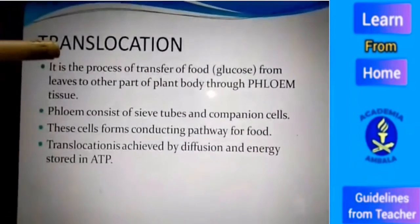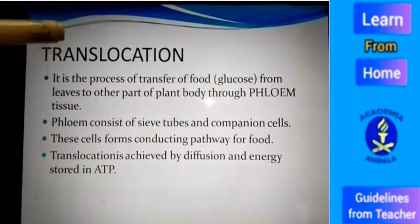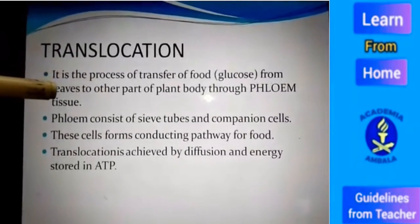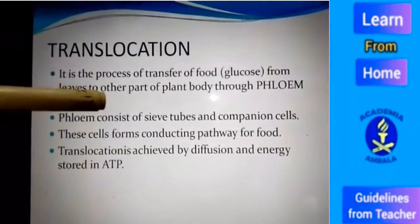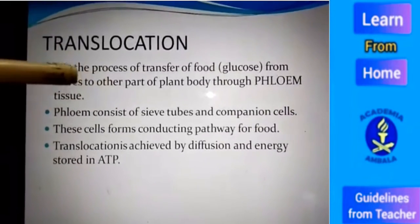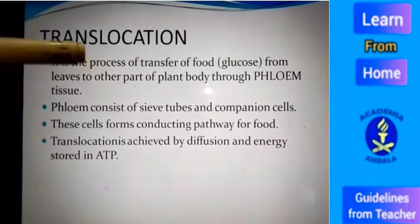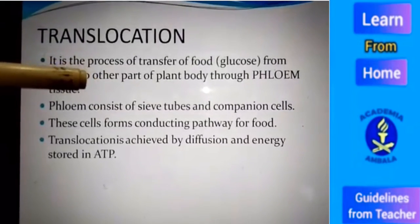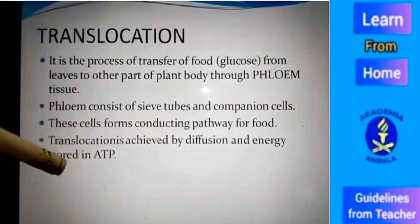The second process is translocation. Translocation is the process of transport of food, that is glucose, from the leaf to other parts of the plant body through phloem tissue. Phloem consists of two types of living cells: sieve tubes and companion cells. These sieve tubes and companion cells connect to form the conducting pathway for food material.